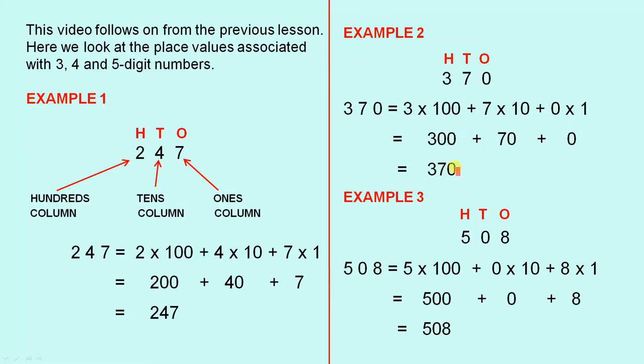which is 370. The next example, 508 is 5 times 100, plus 0 times 10, plus 8 times 1. 500 plus 0 plus 8 is 508.